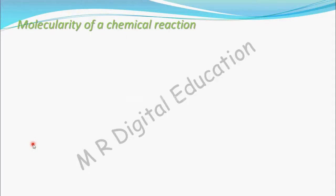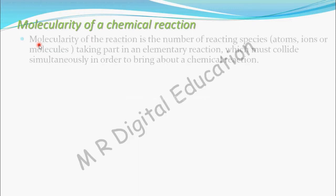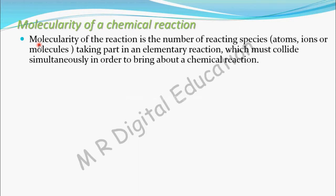Till now, you have seen order of a reaction and what is the actual meaning of it. Now let's see one more concept: molecularity of a chemical reaction. The name itself indicates how many molecules are involved in a chemical reaction. Molecularity of the reaction is the number of reacting species — reacting species may be atoms, ions, or molecules — taking part in an elementary reaction, which must collide simultaneously in order to bring about a chemical reaction.